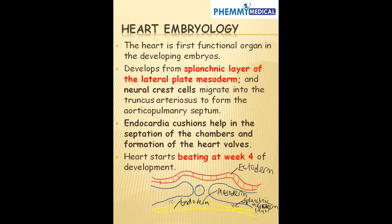Neural crest cells migrate into the truncus arteriosus to form the aorticopulmonary septum. Endocardial cushions help in the septation of the chambers and also formation of the valves. The heart starts beating at week 4 of development.